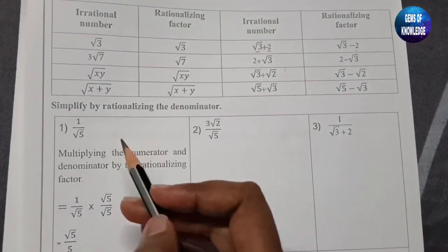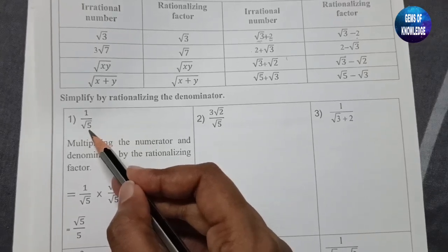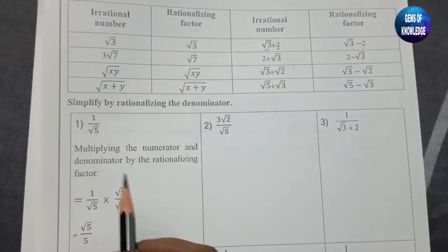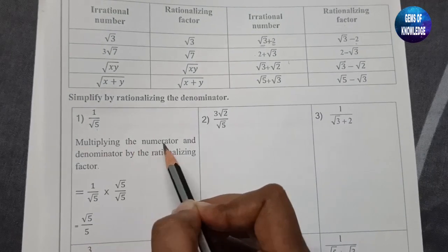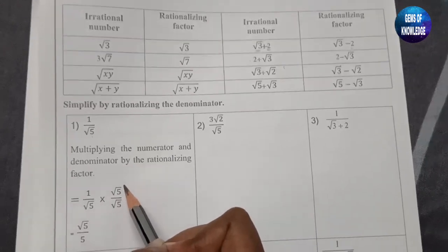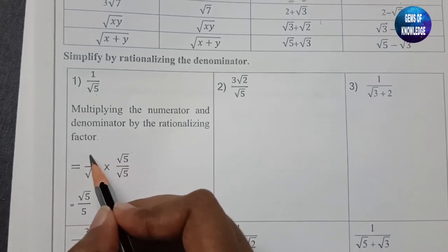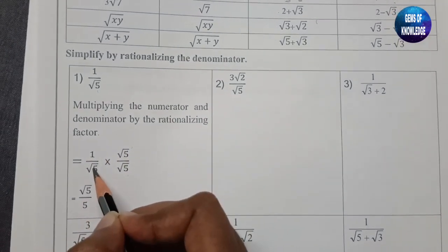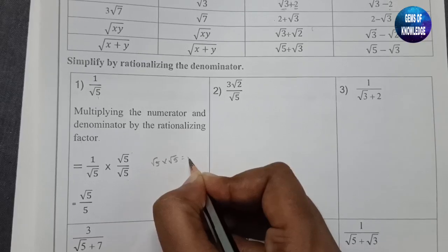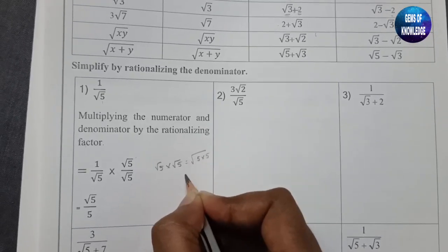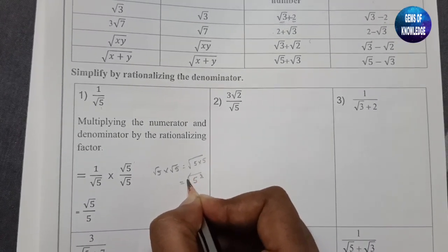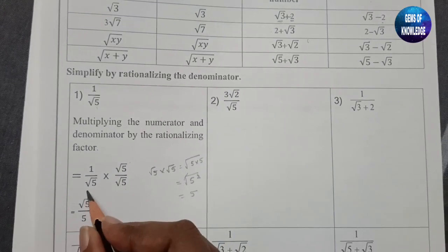Let us start. We have to simplify by rationalizing the denominator. The first question is 1/√5. Since √5 is a monomial term, we multiply both the numerator and denominator by √5. We get 1×√5 = √5 in the numerator, and √5×√5 = 5 in the denominator. So the answer is √5/5.